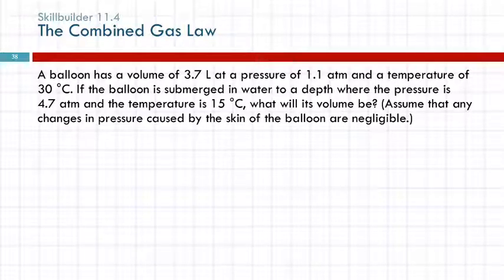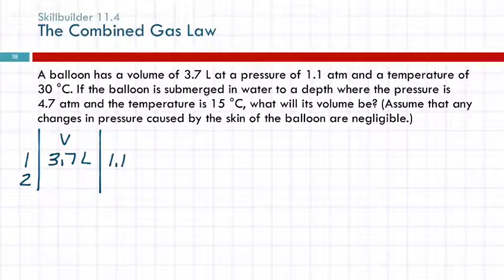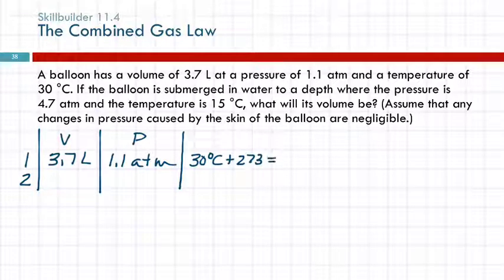So, again, we're going to make a table to organize the information. Condition 1, condition 2. First number is 3.7 liters. So, that's a volume. 3.7 liters at 1.1 atmospheres. That's a pressure. And 30 degrees Celsius. What do we have to do to the temperature? Change to Kelvin. Plus 273 equals 303.